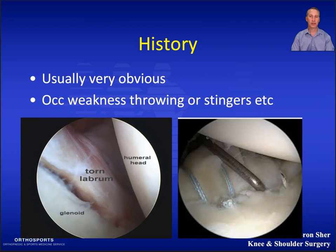For most shoulder dislocations the history is fairly straightforward. Many first-time dislocations end up in the emergency department for reduction. If someone is subluxing or self-reduces after a dislocation, the history may not be as clear.